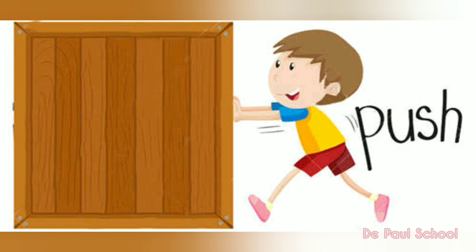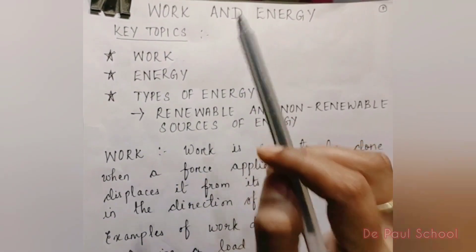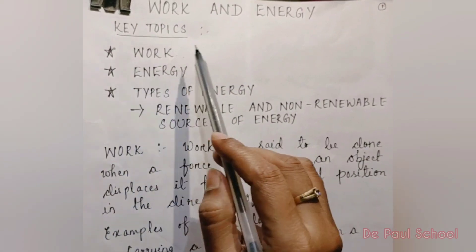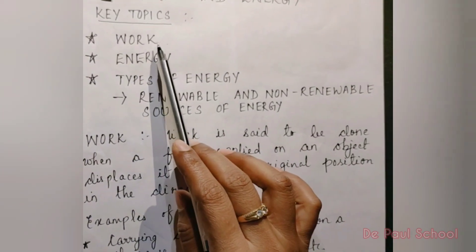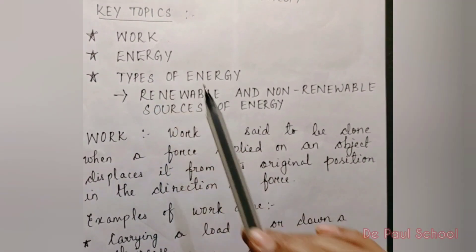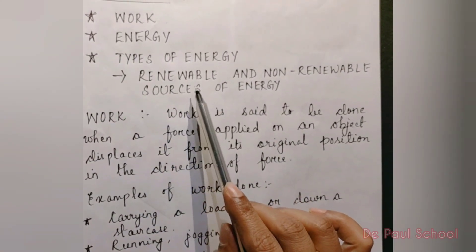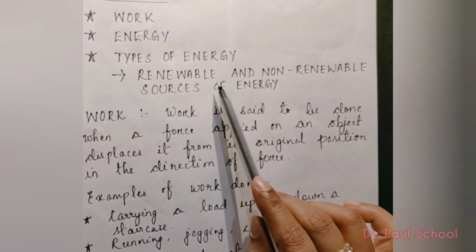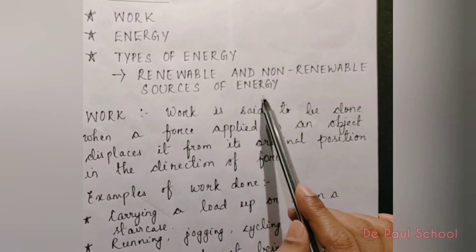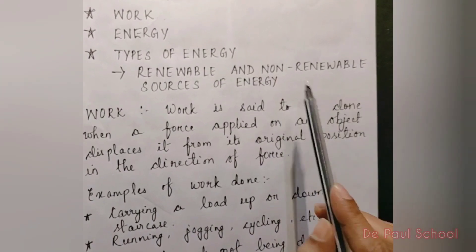To know the answer and many more things, let us get into the topic — Work and Energy. The key topics we are going to deal with in this chapter are: what is work, about energy, types of energy — including renewable energy and its uses and sources, and non-renewable sources of energy and their uses and sources.